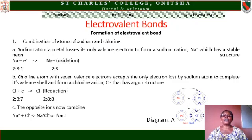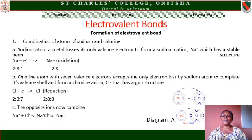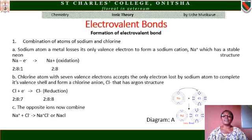Let us use the formation of sodium chloride to explain electrovalent bonds. In the formation of sodium chloride, sodium atom is a metal. It loses its only valency electron to form a sodium cation which has a stable neon structure. The loss of electron by sodium is known as oxidation. The chlorine atom, with seven valency electrons, accepts the only electron lost by sodium atom to complete its valency shell and form a chloride ion that has an argon structure. The process of gain of electron is known as reduction. The sodium ion now unites with chloride ion and forms sodium chloride — an electrovalent compound — and the bond between the two ions is known as electrovalent bond.